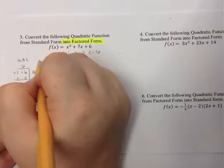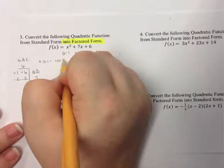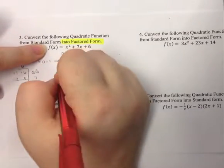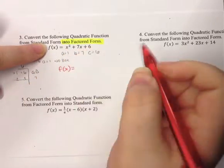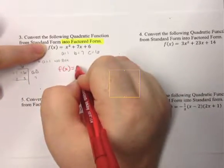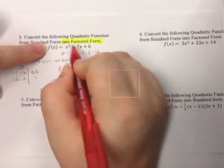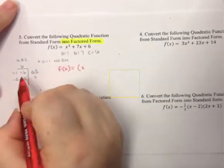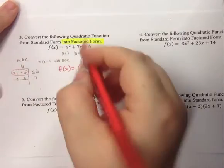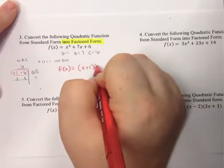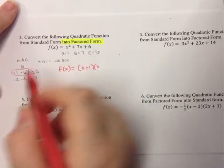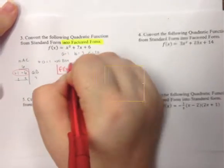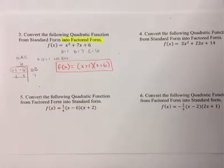Since A is equal to 1, we do not use the box — we can go straight into our answer. Since our GCF is 1, we don't put anything on the outside. We go straight into our factored form: f(x) equals (x + 1)(x + 6). This is factored form, and this is how you would find your x-intercepts so that you could graph them.